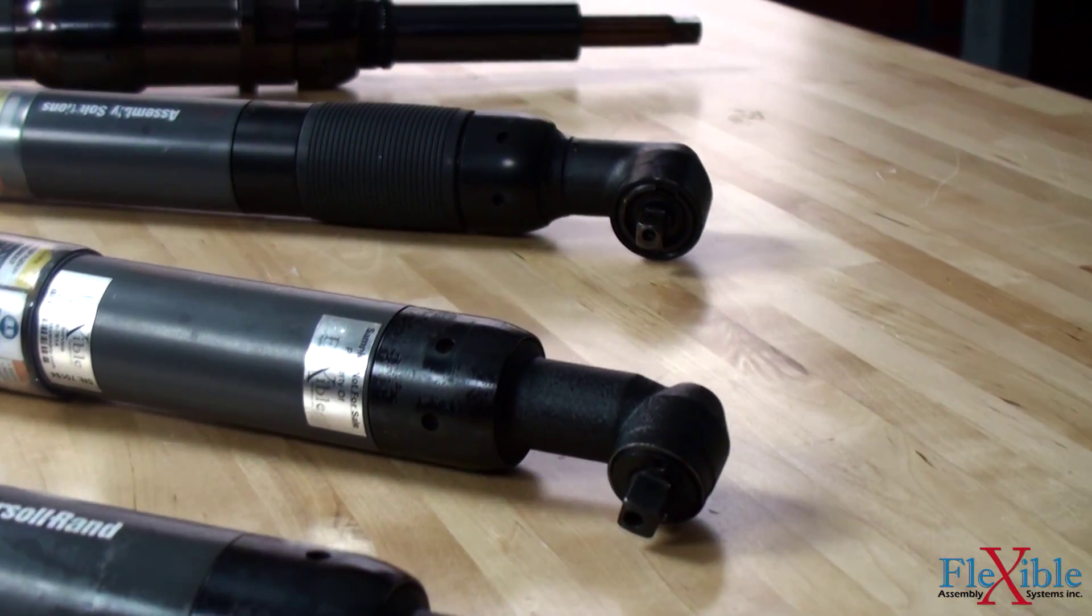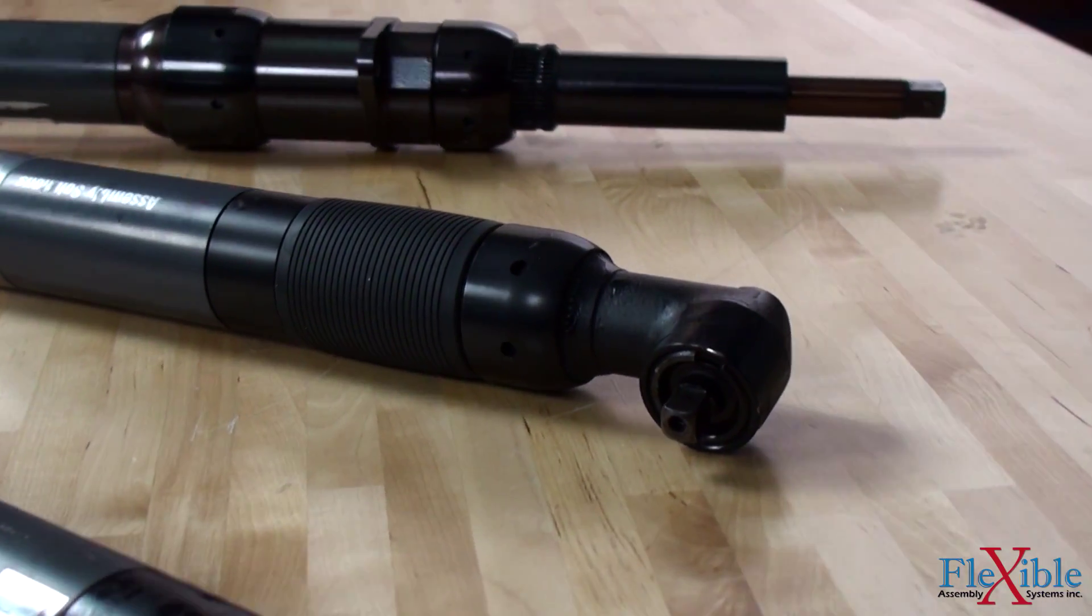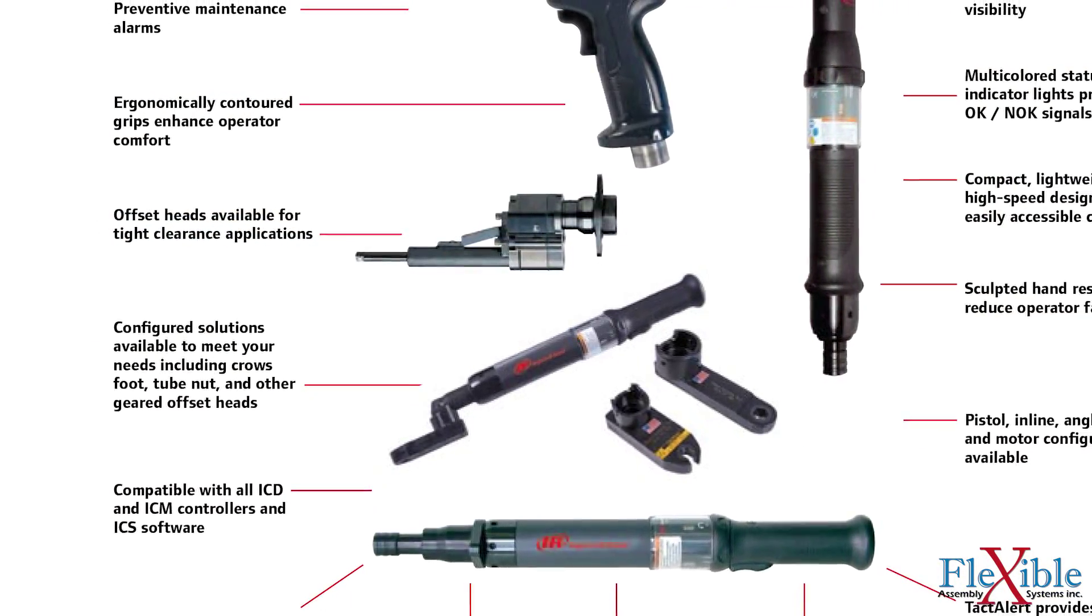Models with an offset head have many custom configuration solutions to meet any need, including crow's foot, tube nut, and other geared heads.